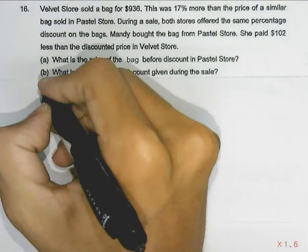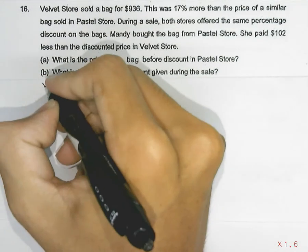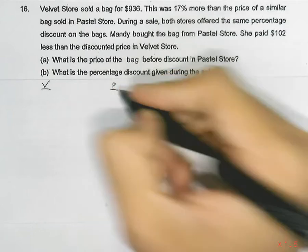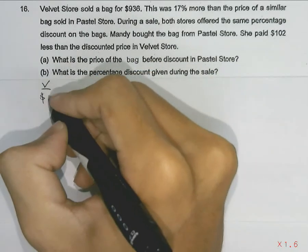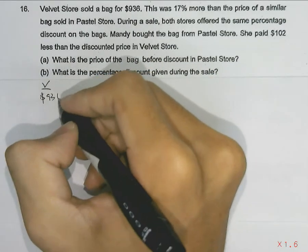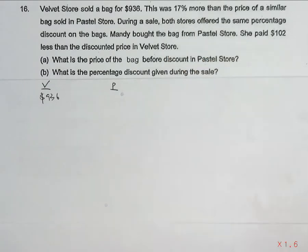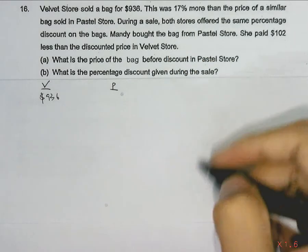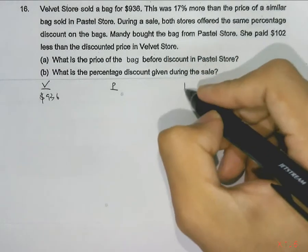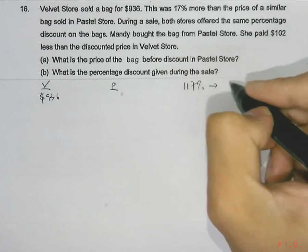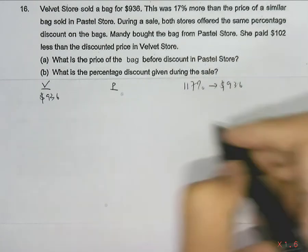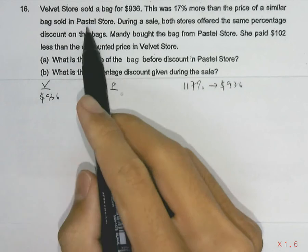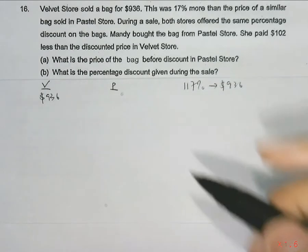We have a velvet store and a pastel store. The velvet store sells the bag at $936, which is 17% more than the price of a similar bag sold in the pastel store. So 117% will be $936, and we need to find 100%, which is the price sold in the pastel store.